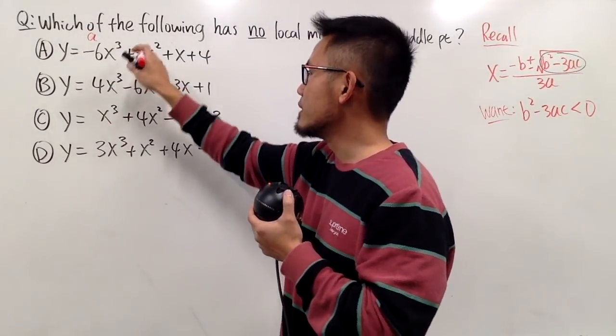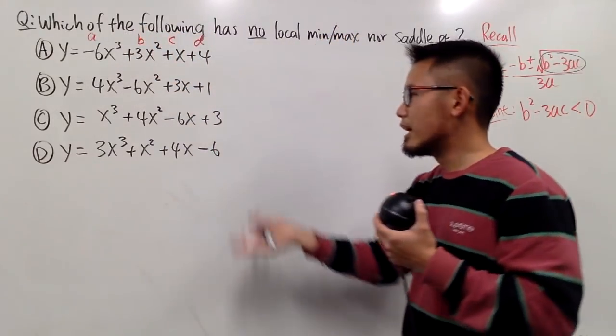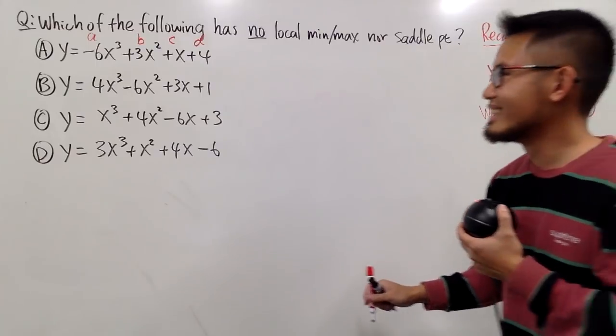Let's write down the a values, the coefficients, and then b, c, and d. I know d doesn't matter, but let's just put it down anyway.